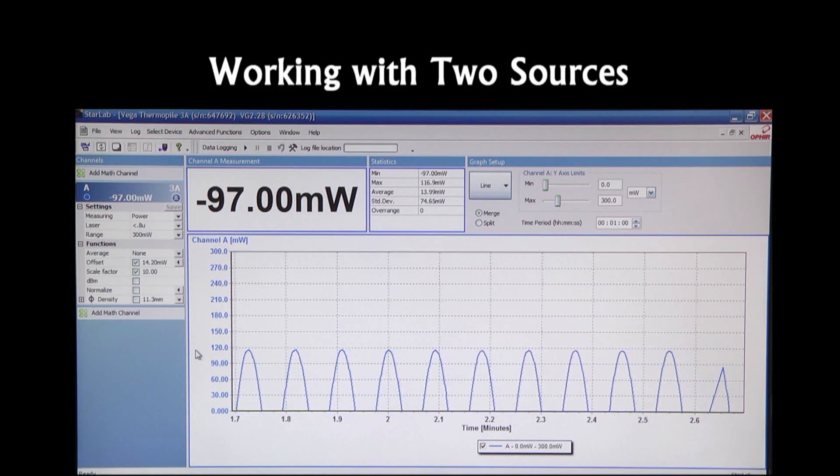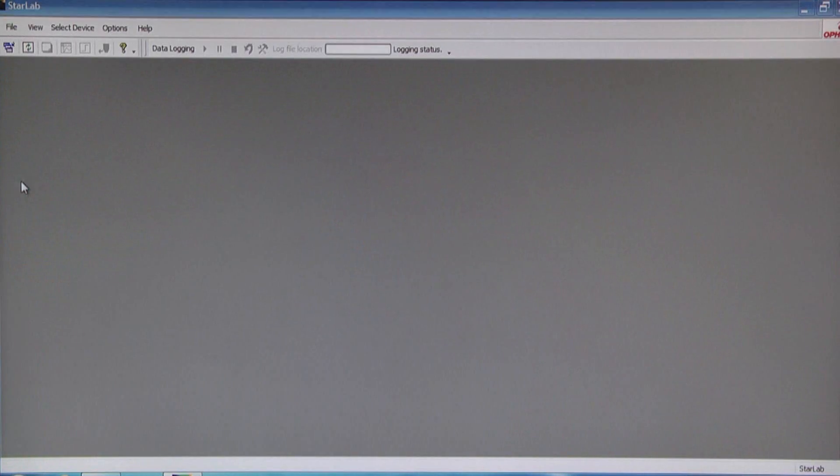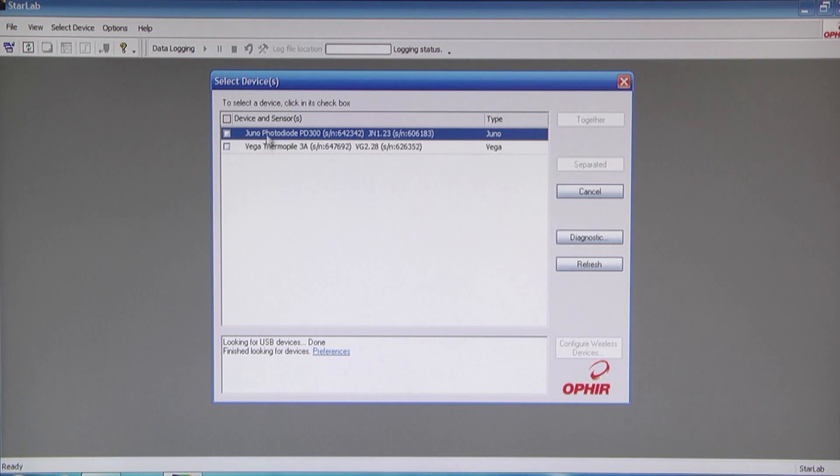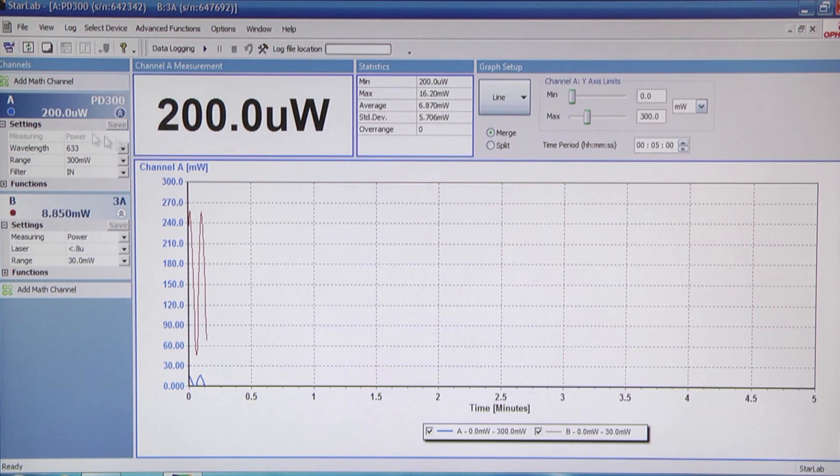Now let's work with two sources. We'll open Starlab again. We see the two sources. To open all the sources together, let's click device and sensors and select together.